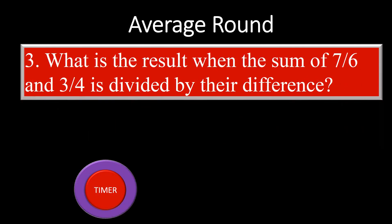What is the result when the sum of 7 sixths and 3 fourths is divided by their difference? Go.